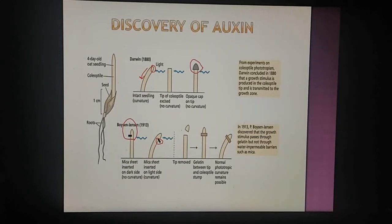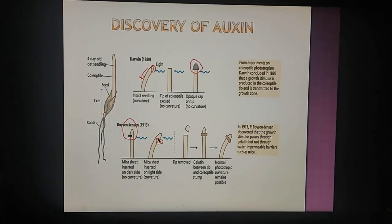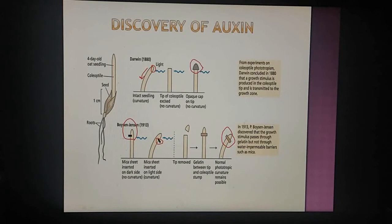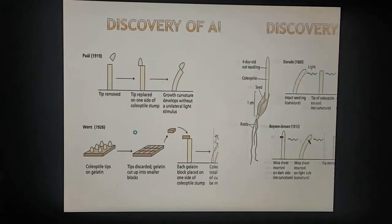In a second experiment, they removed the coleoptile tip and placed a gelatin block in between. Curvature was observed, leading them to conclude that the chemical substance diffuses through the gelatin block but cannot diffuse through the mica sheet.